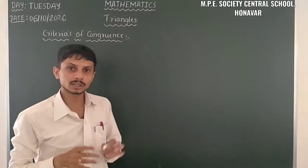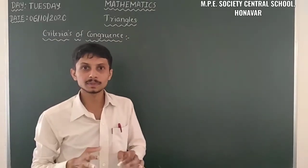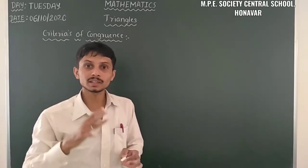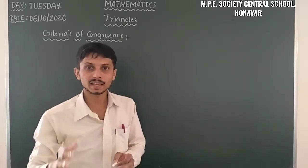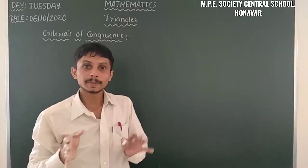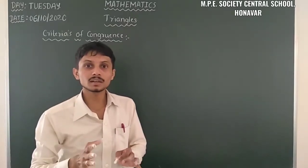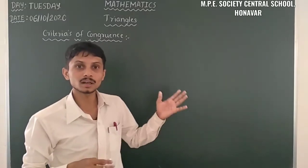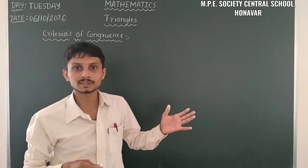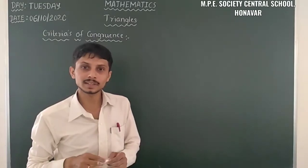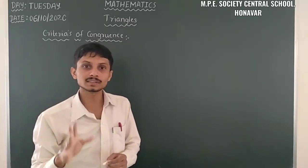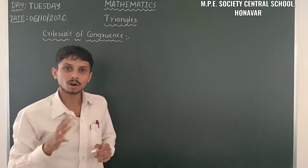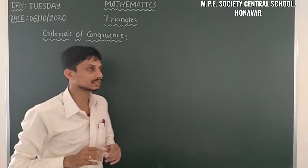We already know about congruency — that means two triangles are congruent when their corresponding sides and corresponding angles are equal. Based on that, we have some axioms related to the criteria of congruency. Firstly, I will take axiom 7.1, which is the SAS congruency.